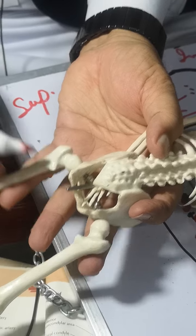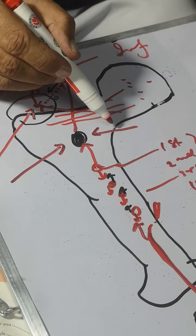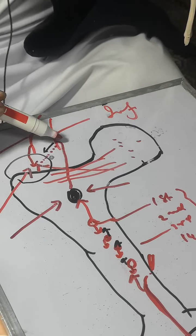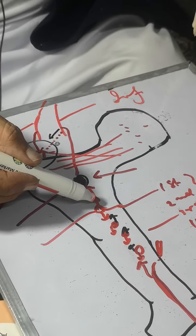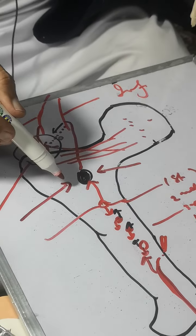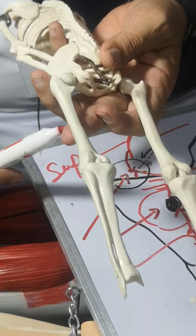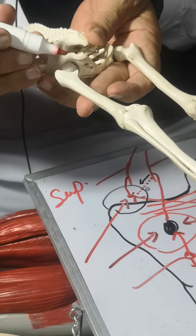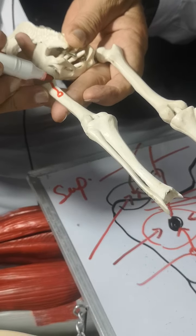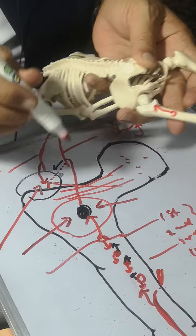This is the lesser trochanter. At the lesser trochanter, there is a transverse branch from the medial circumflex femoral and a transverse branch from the lateral circumflex femoral, a descending branch from the femoral artery, a descending branch from the inferior gluteal artery, and the ascending branch of the first perforating artery. The first perforating divides into ascending and descending branches. In this way, a cruciate anastomosis is established at the lesser trochanter.